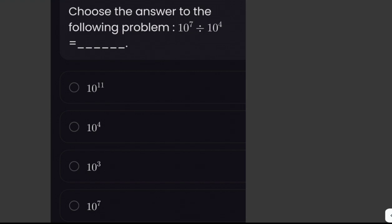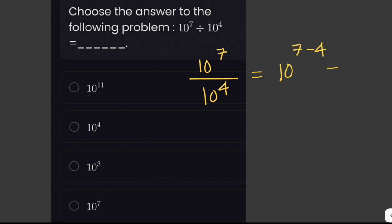10 to the 7th divided by 10 to the 4th. By using the law of exponents, when two terms have the same base — in this case 10 — we simply subtract the exponents in division. So this becomes 10 to the power of 7 minus 4, and 7 minus 4 is 3, giving us 10 cubed as the answer.